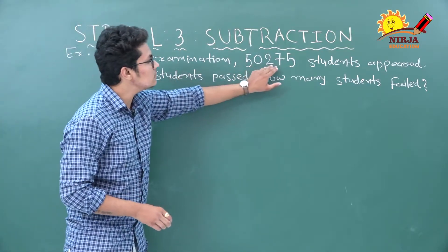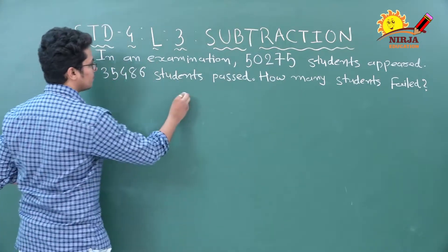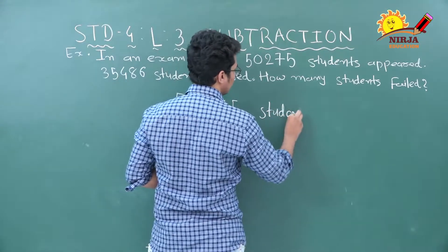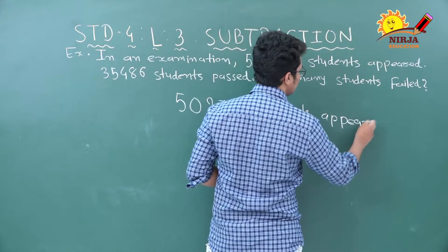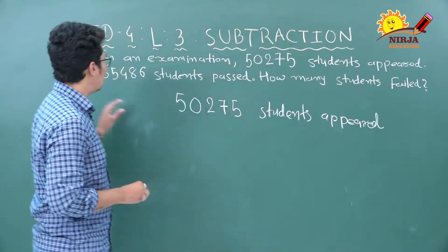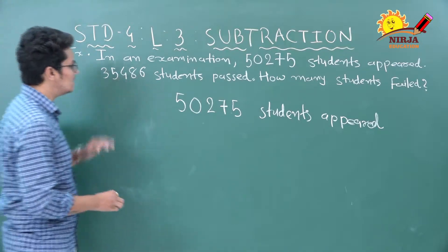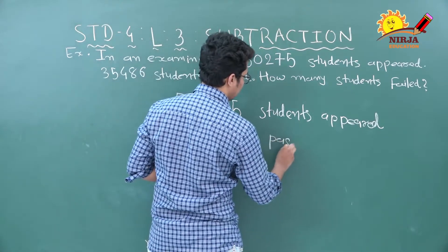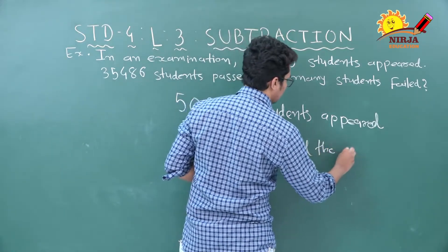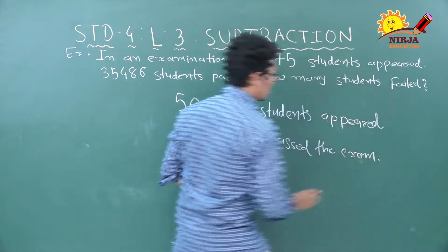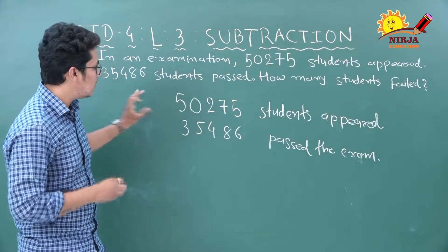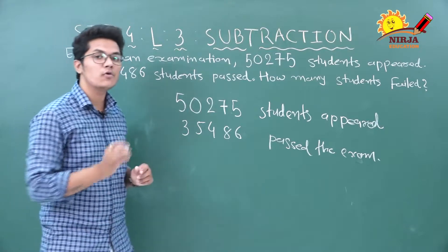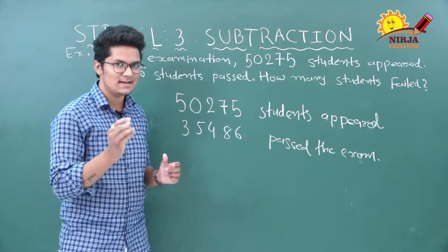First information: 50,275 students appeared in the examination — that means they were present in the exam. Second information: 35,486 students passed the exam. These are the two pieces of information given to us. From the total students, we will subtract those who passed to find the number of students who failed.